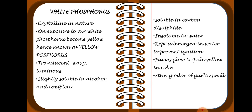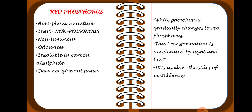White Phosphorus has a strong odor of garlic and its fumes glow pale yellow in color. Red Phosphorus is amorphous in nature. It is inert — non-poisonous or of low toxicity — non-luminous, odorless, and insoluble in carbon disulphide. It does not give out fumes. White Phosphorus gradually changes to Red Phosphorus; this transformation is accelerated by light and heat.